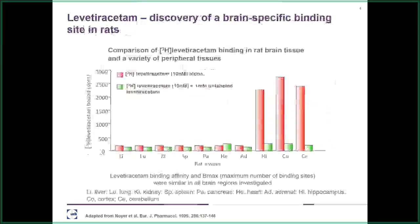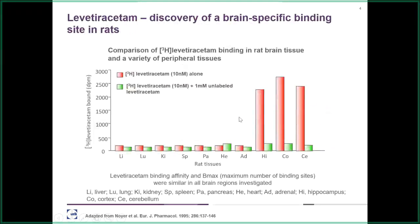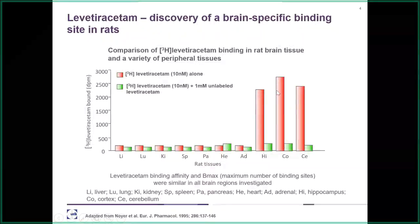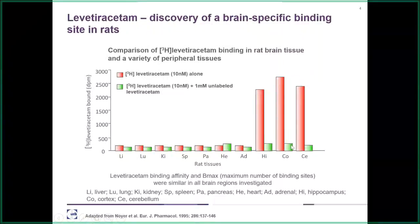The experience with levetiracetam taught us a lot about which models are relevant for anti-epileptic drug discovery. It also showed that levetiracetam must associate with a truly novel mechanism different from the two classical classes — sodium channels or GABA receptors. We therefore invested significant efforts in understanding the mechanism of action. One important study applied labeled levetiracetam to homogenates from CNS regions (cerebellum, cortex, hippocampus) and peripheral organs (lung, kidney, spleen, pancreas). Red bars show specific binding, green bars non-specific binding.